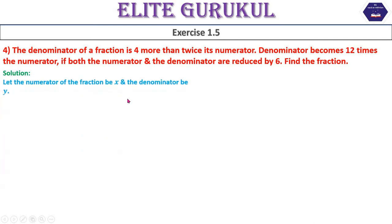First, we will see the fraction of the numerator and denominator. We will fix the variable. Let the numerator of the fraction be x and the denominator be y. So what is the fraction? x upon y. Therefore, the fraction is equal to x upon y. Now, according to conditions, we will form the simultaneous equations.